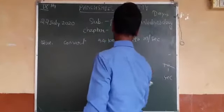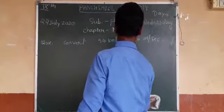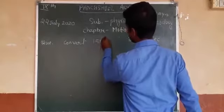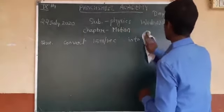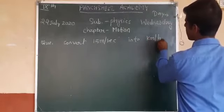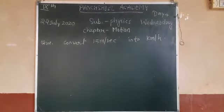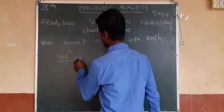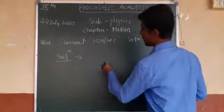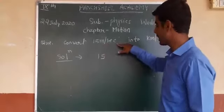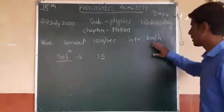Another question: convert 15 meter per second into how many kilometer per hour? So the solution is like this — 15 meter per second is a smaller unit and kilometer per hour is a larger unit.